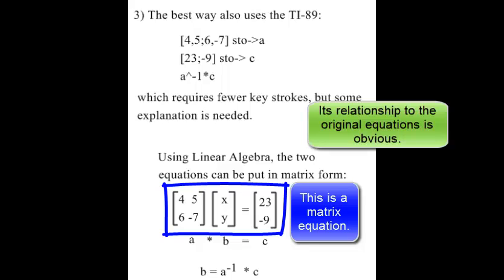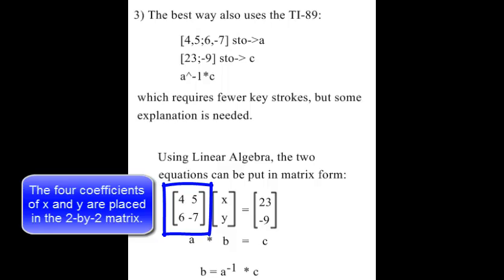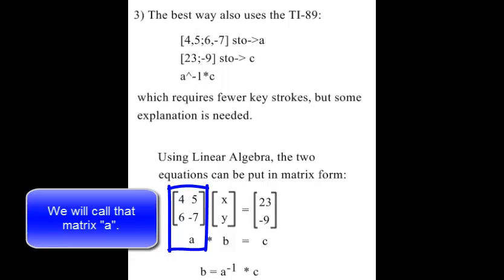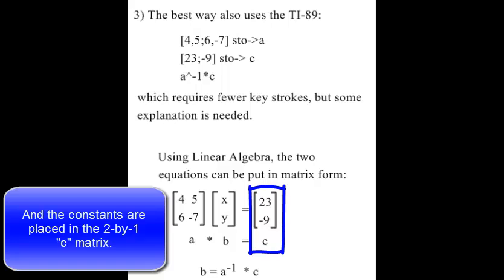Its relationship to the original equations is obvious. The four coefficients of x and y are placed in the 2 by 2 matrix. We will call that matrix A. The unknowns x and y are placed in the 2 by 1 matrix that we will call B. And the constants are placed in the 2 by 1 C matrix.